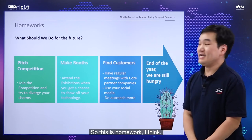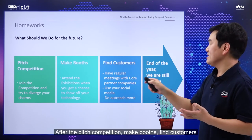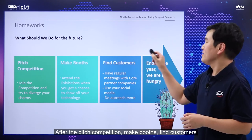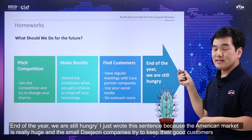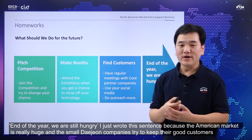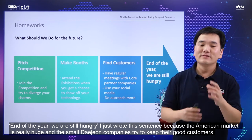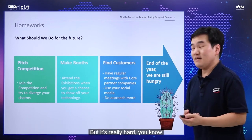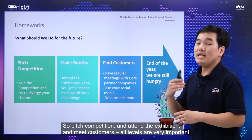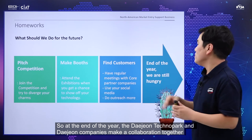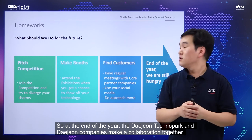So what should we do for the future? After the pitch competition, make a booth and find customers. End of the year, we are still hungry. In the American market, it's really huge, so small Daejeon companies try to keep their good customers — but it's really hard. Pitch competition, attend exhibitions, and meet customers — all these levels are very important. The Daejeon Technopark and Daejeon companies make a cooperation together.